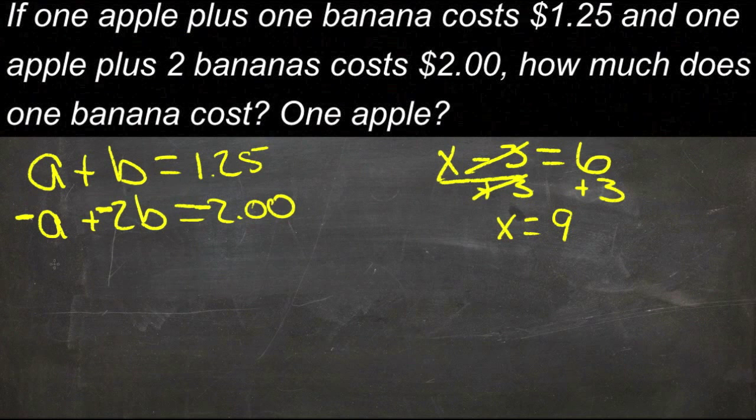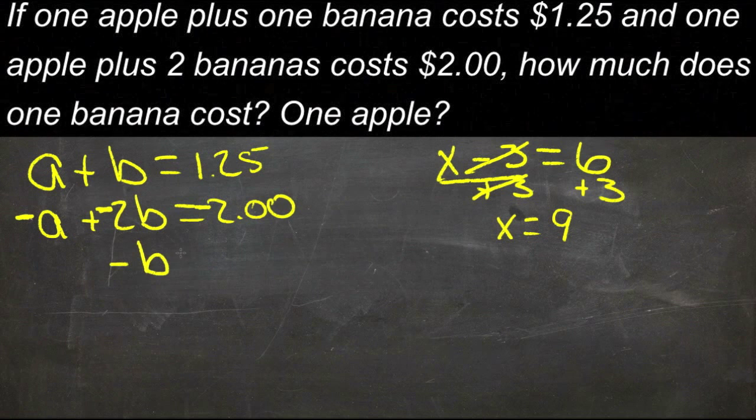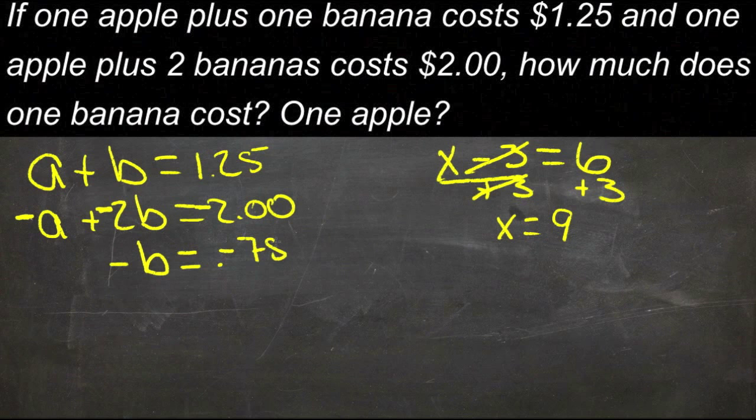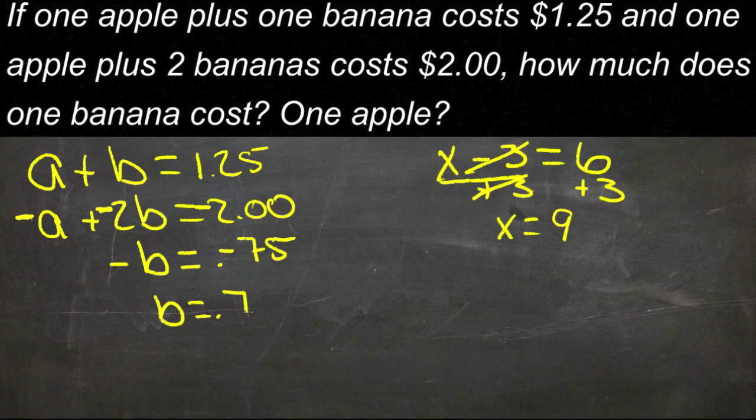If I add a plus negative a, I get 0. If I add b plus negative 2b, I get negative b. And if I add 1.25 to negative 2, I get negative 0.75. Now I have, divide everything by negative 1, b equals 0.75.